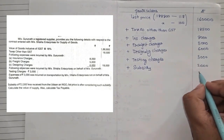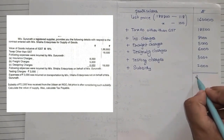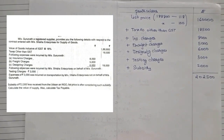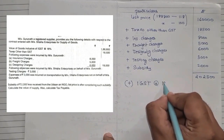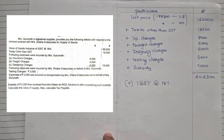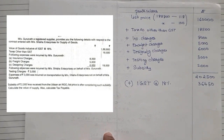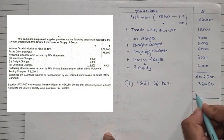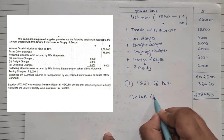Adding up: 1,60,000 + 18,500 + 8,000 + 5,000 + 6,000 + 3,000 + 2,000 = 2,02,500. On this amount we add IGST at the rate of 18%: 2,02,500 × 18% = 36,450. Adding 36,450 to 2,02,500 gives us a total value of supply of 2,38,950 rupees.